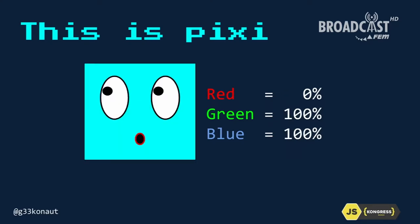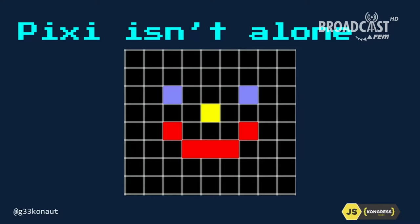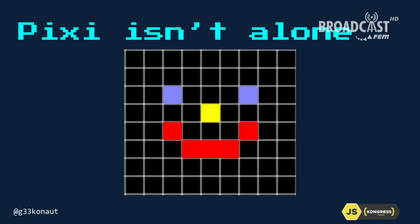Then we have this wonderful fella — she is green and blue, which gives this beautiful teal or turquoise color. You can also do gray when you put everything at the same level. At 66%, it's twice as bright as a lower gray. And if you put it up to 100%, then you get white.